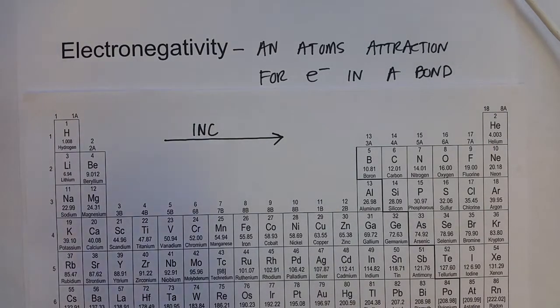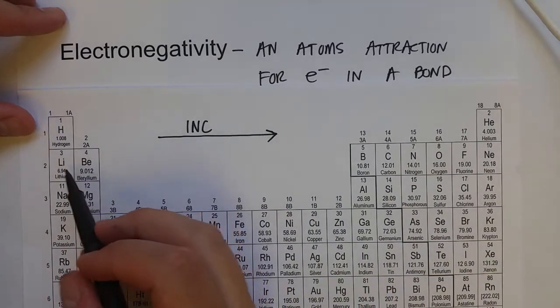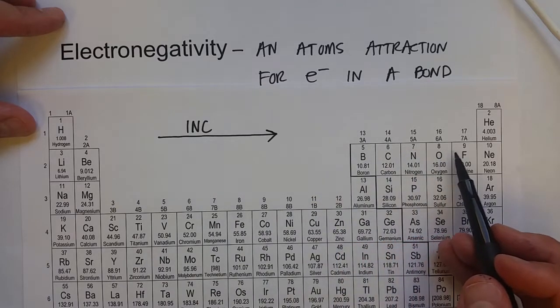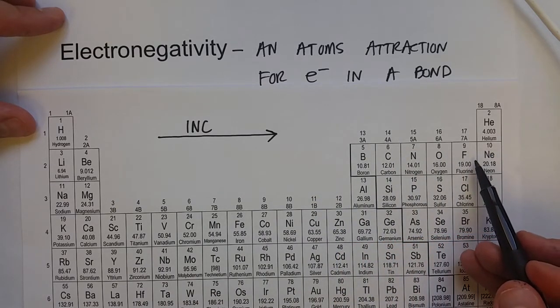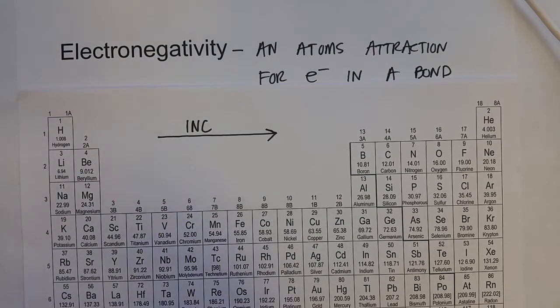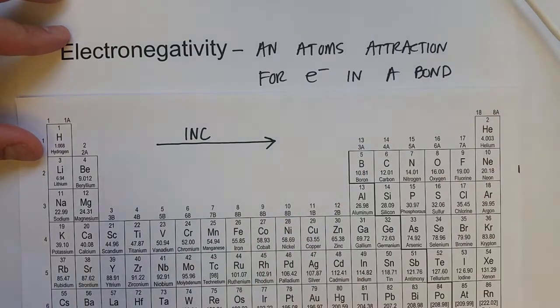And that has to do with the number of protons and what is known as the effective nuclear charge. But as we go from left to right, all of the electrons are in the same energy level, but the number of protons is increasing. And so that's increasing its effective nuclear charge, which increases its attraction for the electrons.